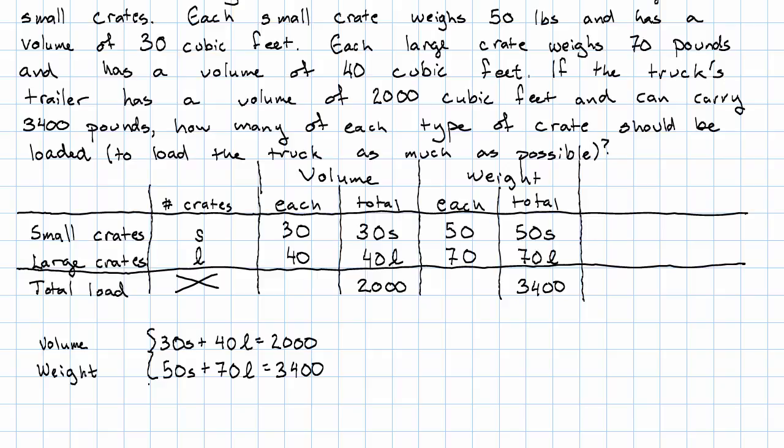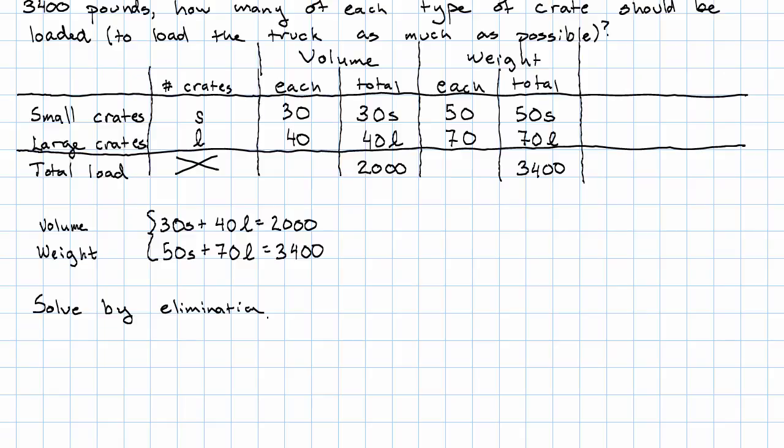Again, we get a system that's well set up for solving by elimination. But now the arithmetic involved in the elimination is a little bit harder. Neither one is the obvious choice to get rid of, but there's no obvious number to multiply by. I'm going to say I'm going to get rid of S.